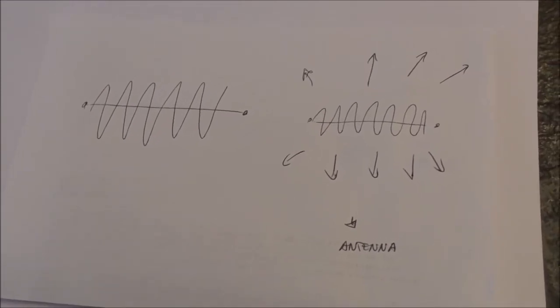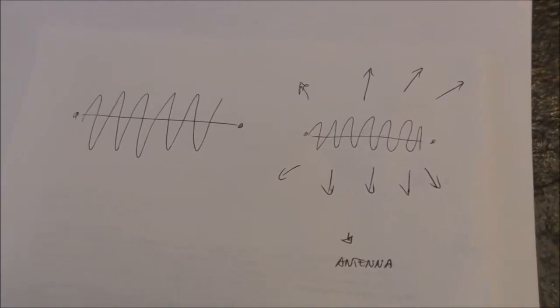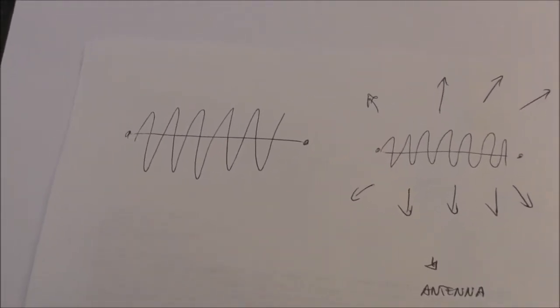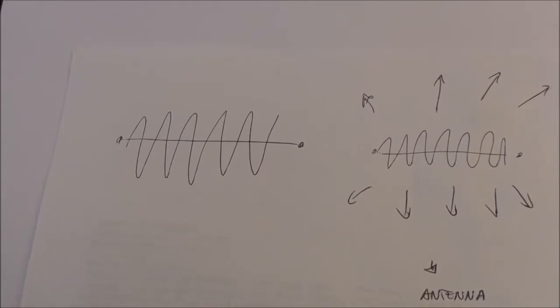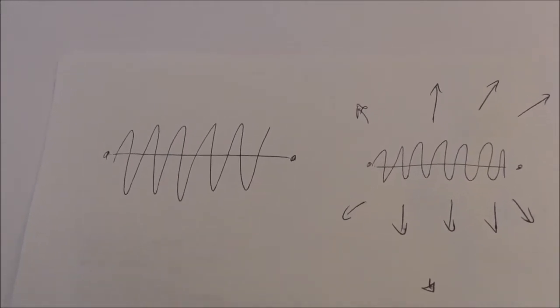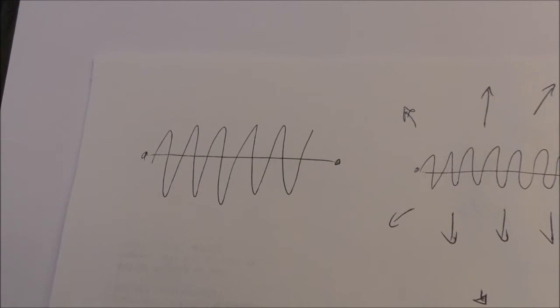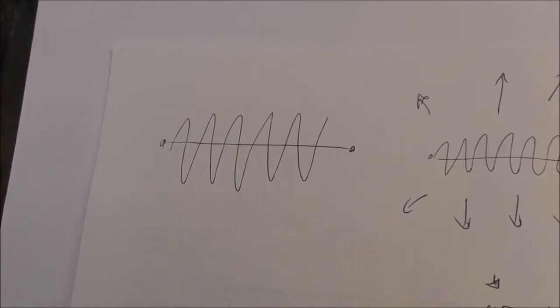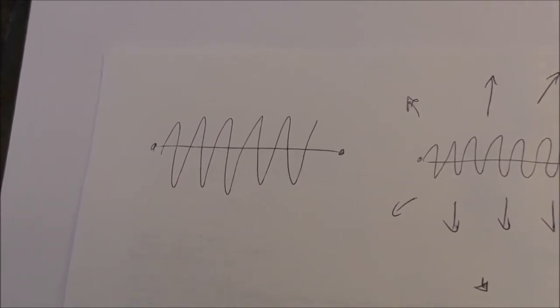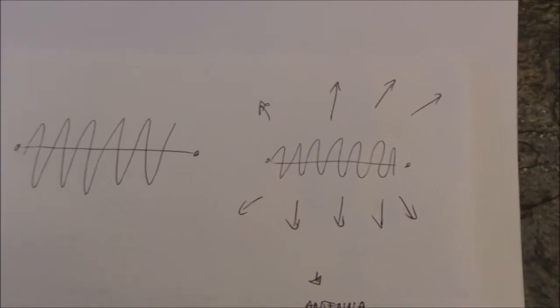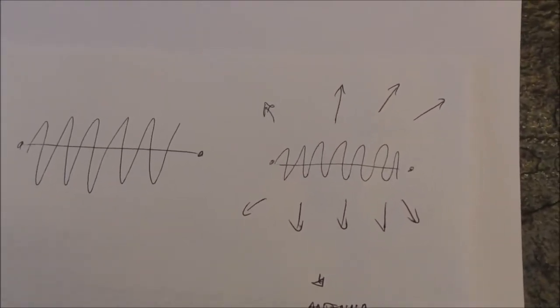So before we get started, I have some brief history. When people first found out they could transmit electromagnetic waves through a conductor, they were very excited, because when you put electromagnetic waves through a conductor, they not only go up and down the conductor, they are transmitted out into the air, and that's how the antenna was born.